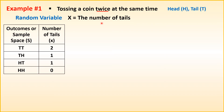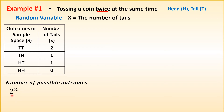We need to list down all the possible outcomes, or the sample space. When you toss a coin twice, we will have outcomes: tail-tail, tail-head, head-tail, and head-head. The number of tails for each: 2, 1, 1, and 0. So the number of possible outcomes is 4. To find the number of possible outcomes, we can use the formula 2 raised to N, where 2 is the number of faces of the coin and N is the number of tosses. We have 2 raised to the 2nd power, which equals 4.